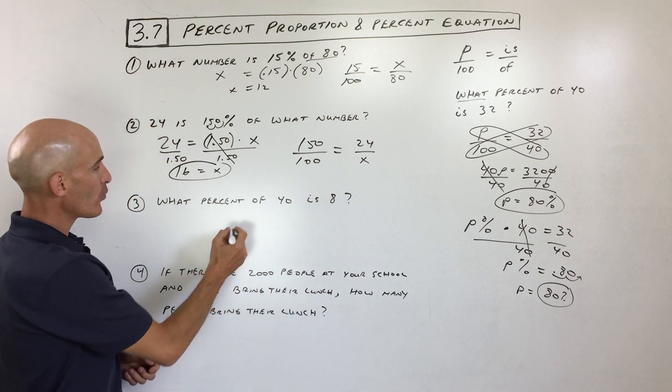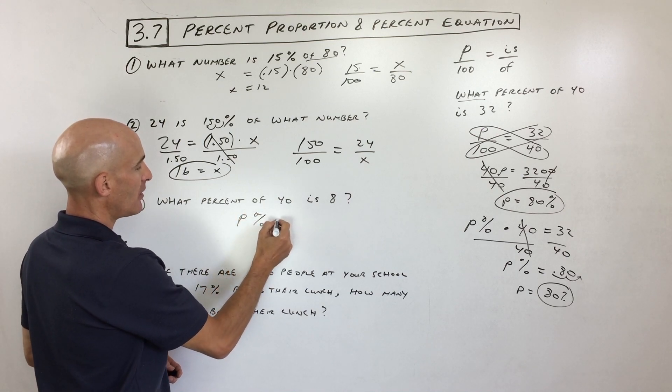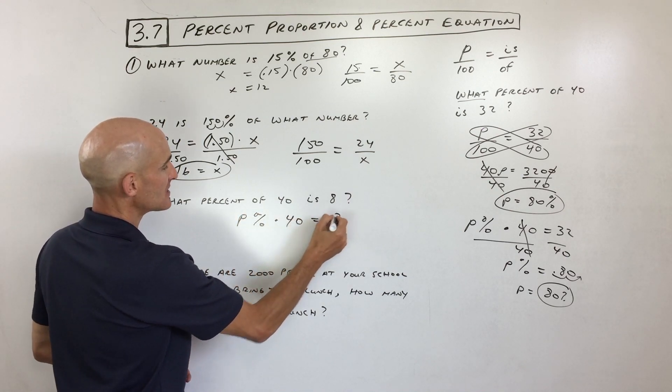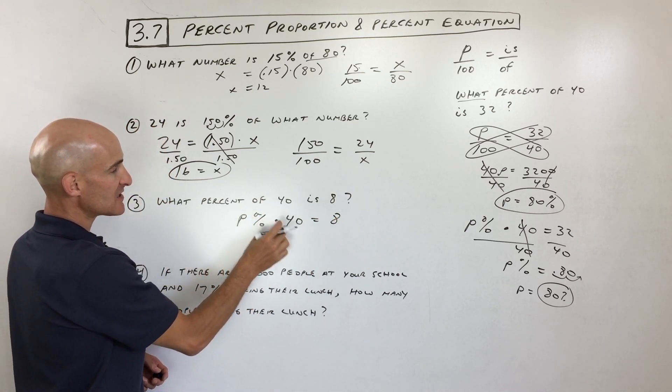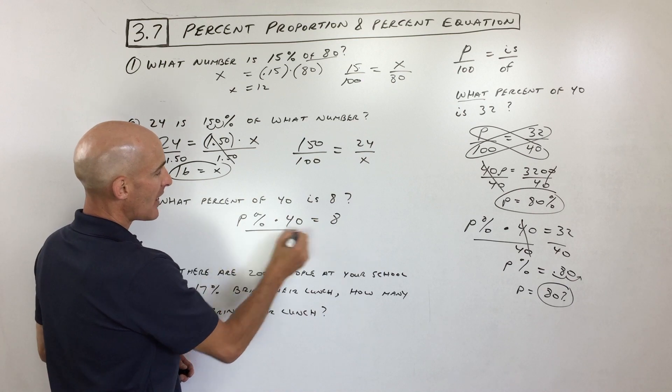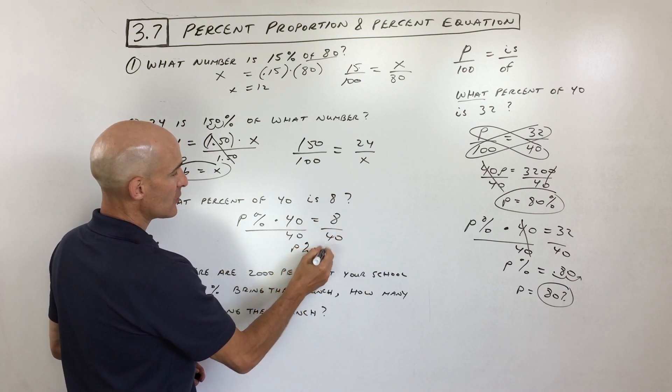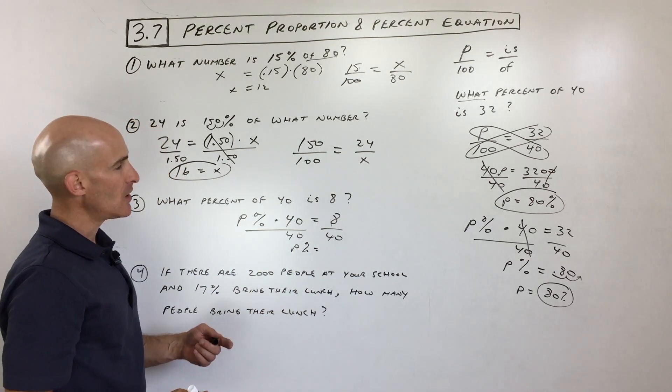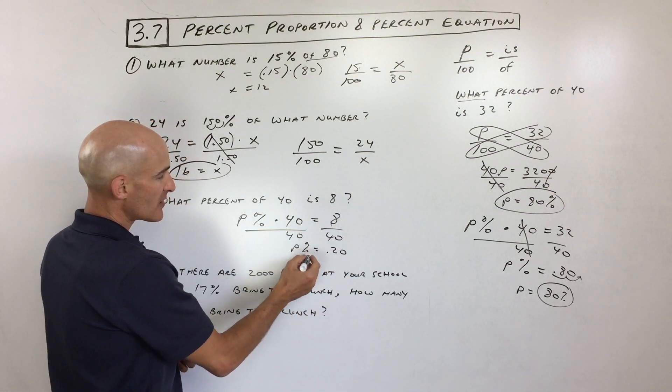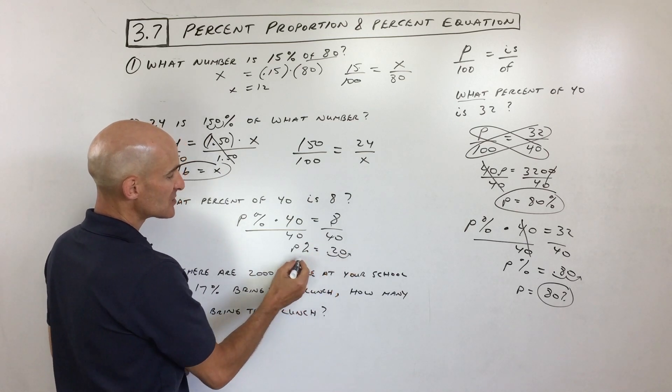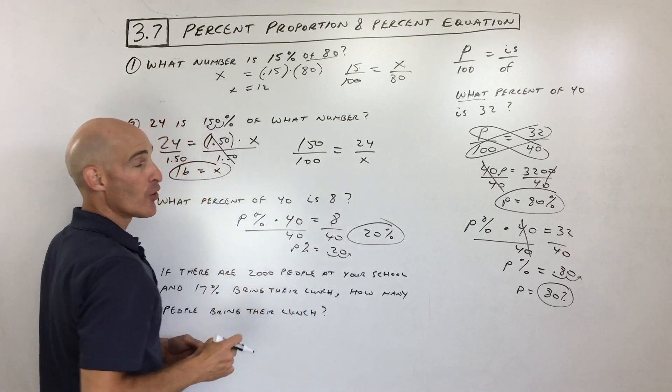What percent of 40, okay, what percent of 40 is 8? So there's our variable what? We don't know. Percent. Of means times. Is means equal. Divide both sides by 40, right? P percent equals 8 divided by 40 is, let's see, 1.5. That comes out to 0.20. And then you can do that in your calculator. And then we're going to move that decimal two places to the right to convert this into a percentage. That's going to be 20%.